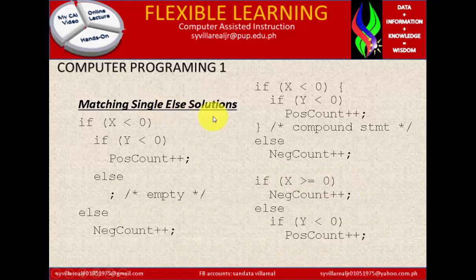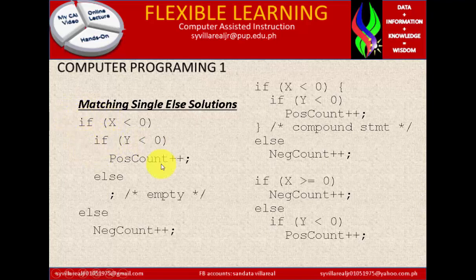Matching single else solution. If x is less than 0, if y is less than 0 — this is multi-if — pos count ++. Else, empty. Else, neg count ++. Then continue: if x is less than 0, begin — that's why, if you see if with a condition, after the condition you need to put begin to make it more accurate.